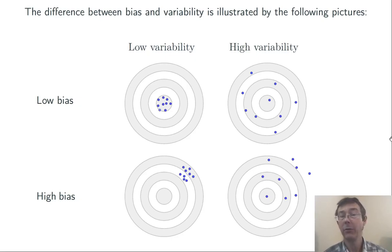Below that, I have low variability, but high bias. I'm systematically missing the target, but I'm doing it in a way that has very low variability. My darts are all still very tightly clustered. On the right, we see two situations where we have high variability.